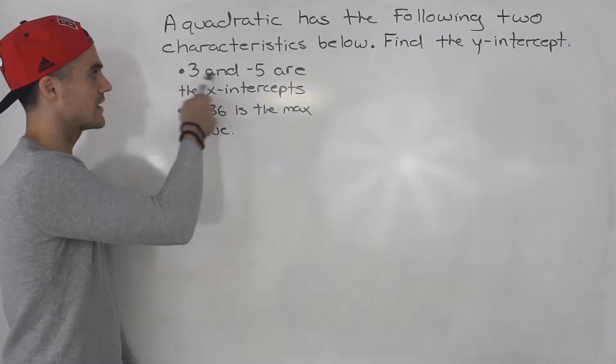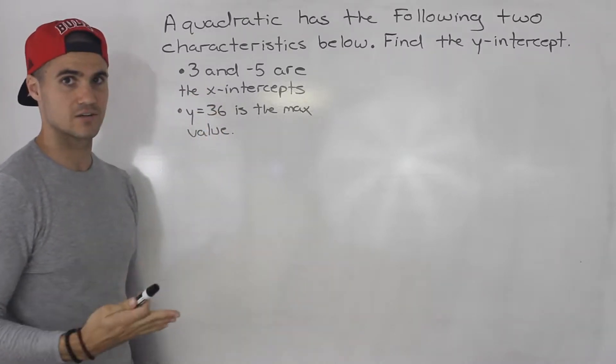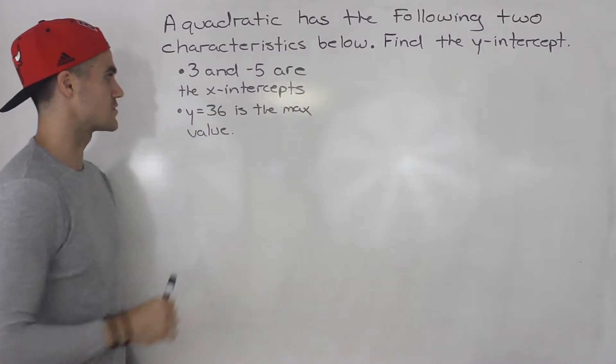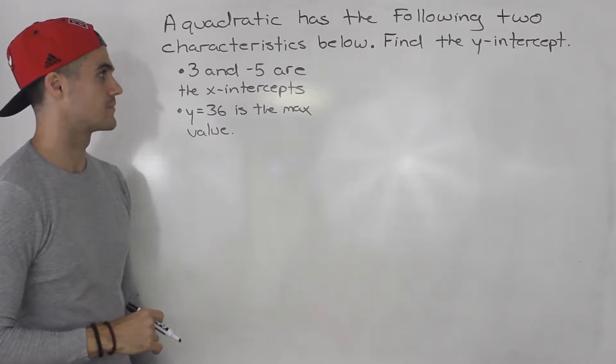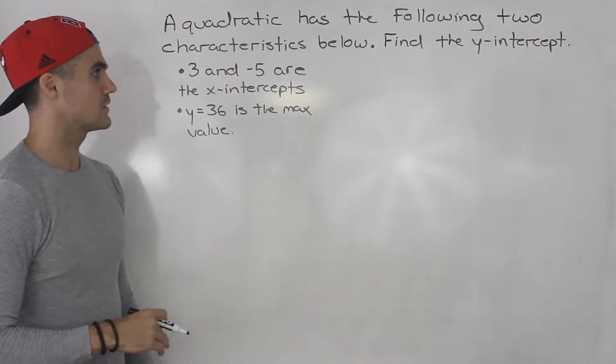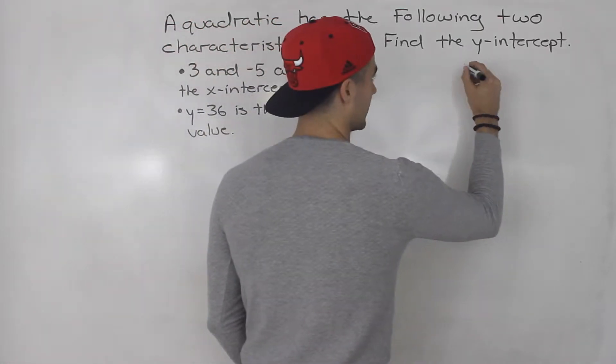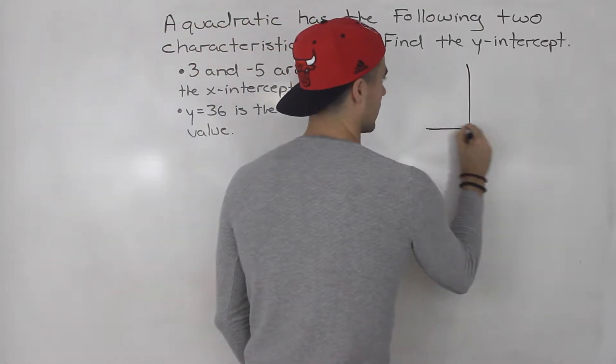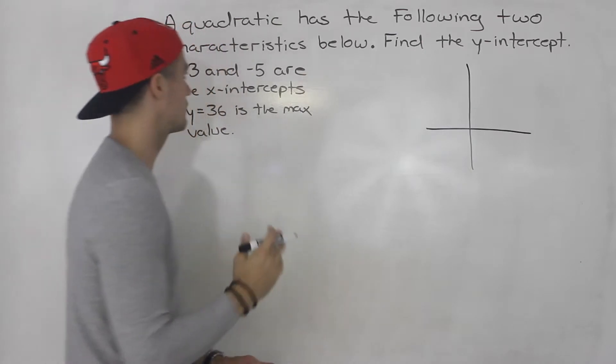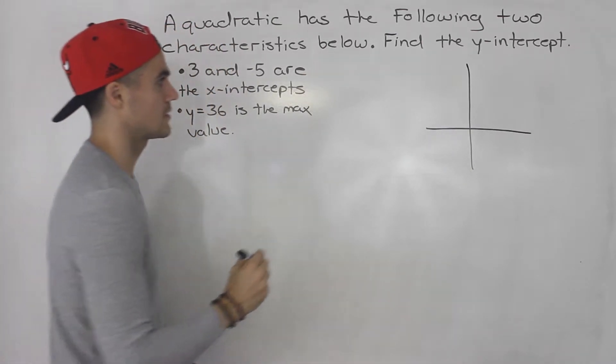So this quadratic has 3 and negative 5 as the x-intercepts, and y equals 36 is the max value. Now, before doing any algebraic stuff, I highly recommend you draw a diagram when you get a question like this, just so you can see everything visually. It's going to make more sense to you.